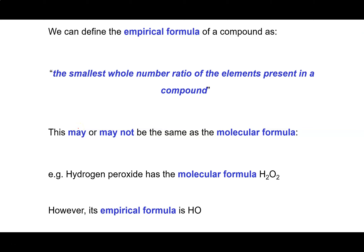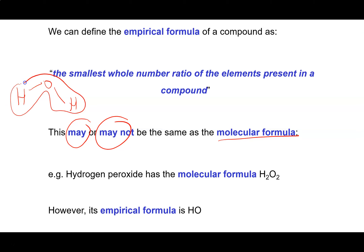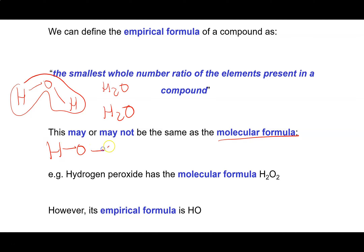For an ionic compound, this is just going to be the same as the formula of the compound. But this may or may not be the same as the molecular formula. For example, water is made up of molecules that contain two hydrogen atoms and one oxygen atom, and the molecular formula H2O is also the empirical formula. But for hydrogen peroxide, the molecular formula is H2O2, and the empirical formula is different. For covalent compounds, the molecular formula and the empirical formula could be different.